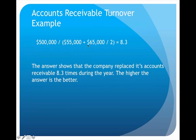We add the two receivable amounts together and divide by two to get the average, then divide that into the net sales of $500,000. The result is 8.3, meaning during the year this company collected and replaced their accounts receivable 8.3 times. Again, the higher that number is, the better.